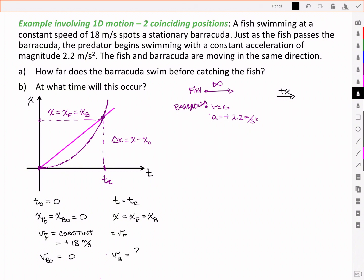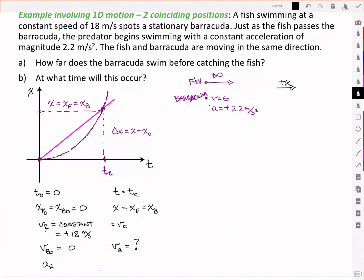But the velocity of the barracuda started out at zero and ended up at some higher velocity, based on an acceleration of positive 2.2 meters per second squared.